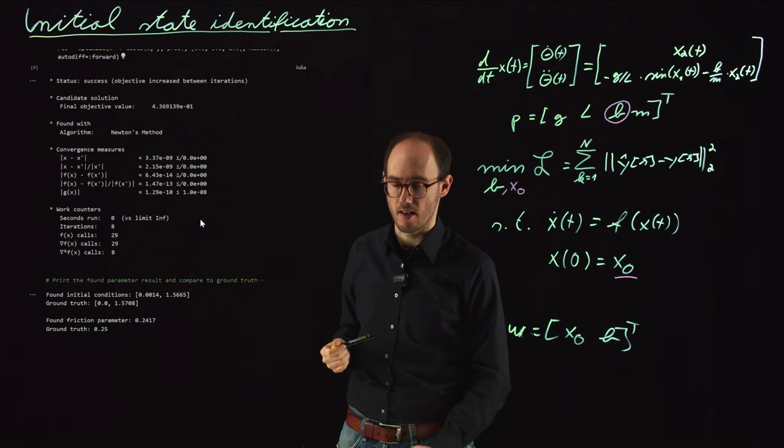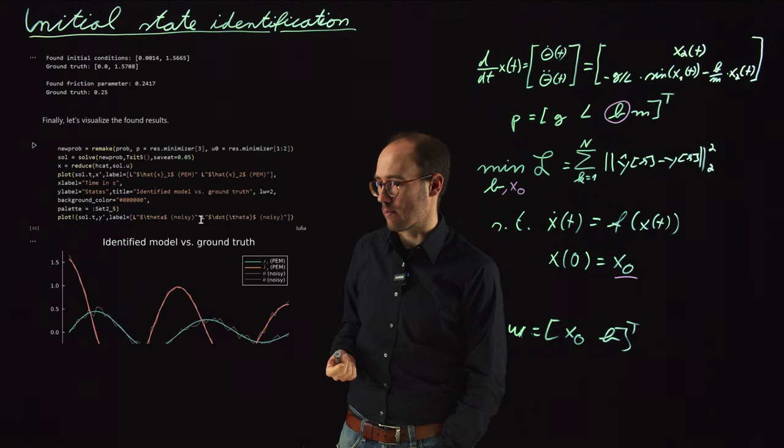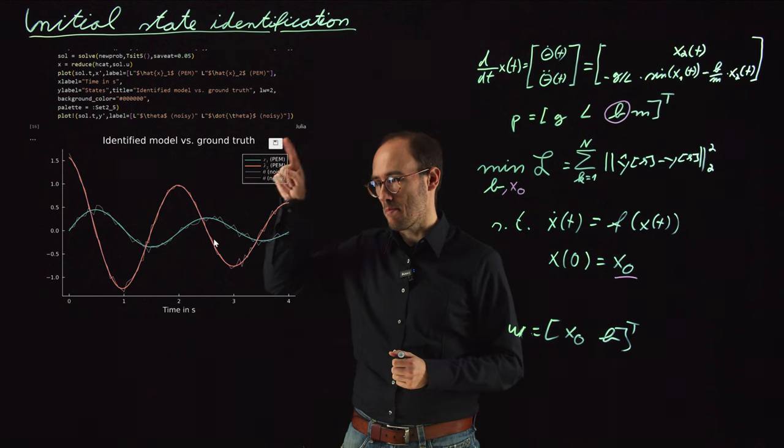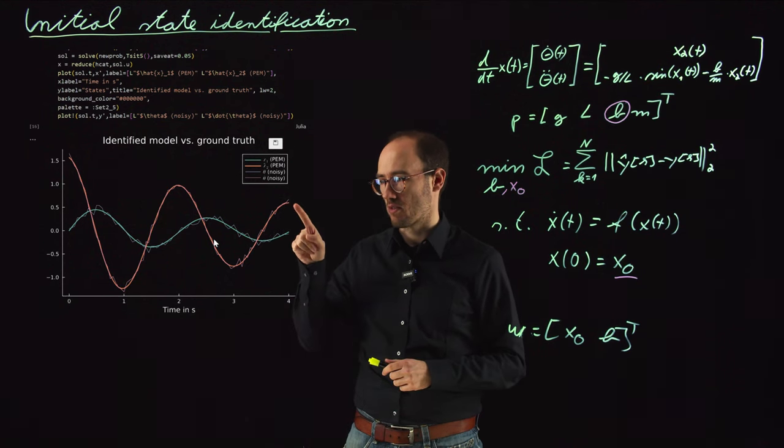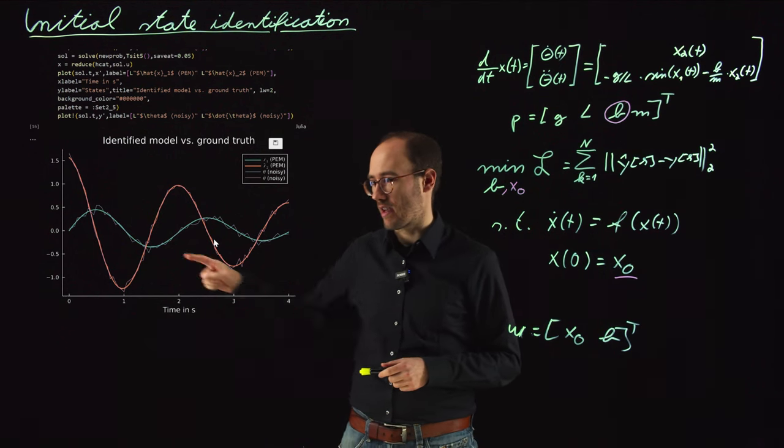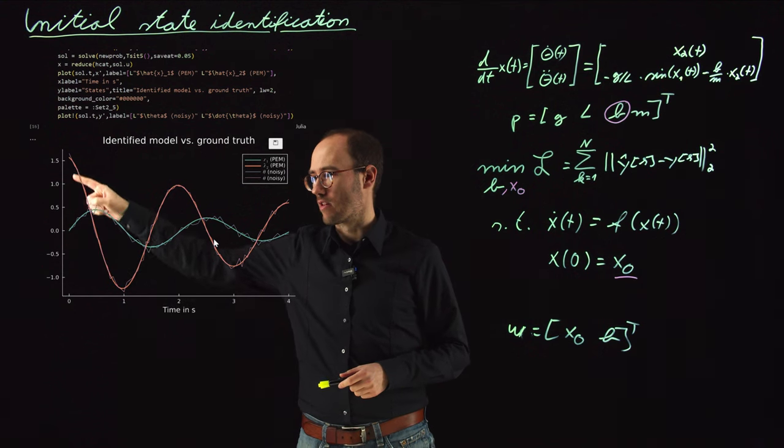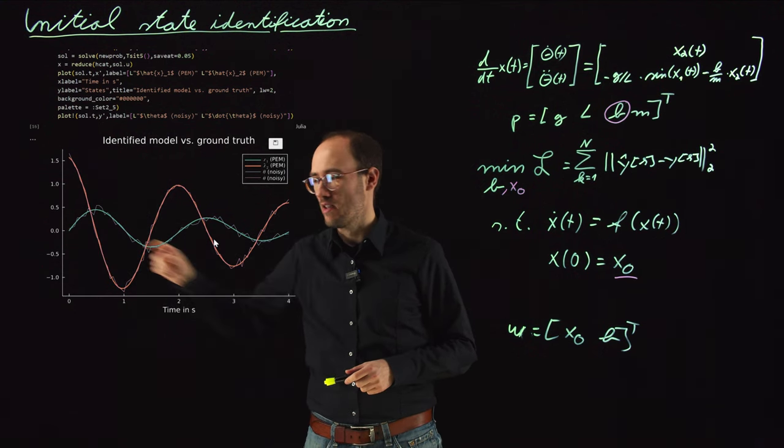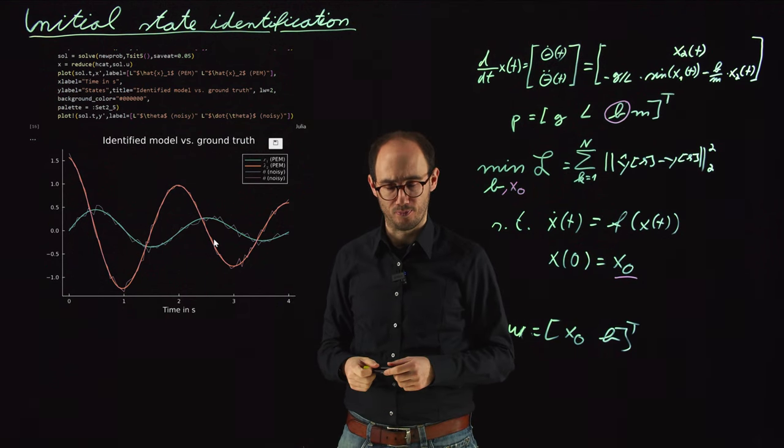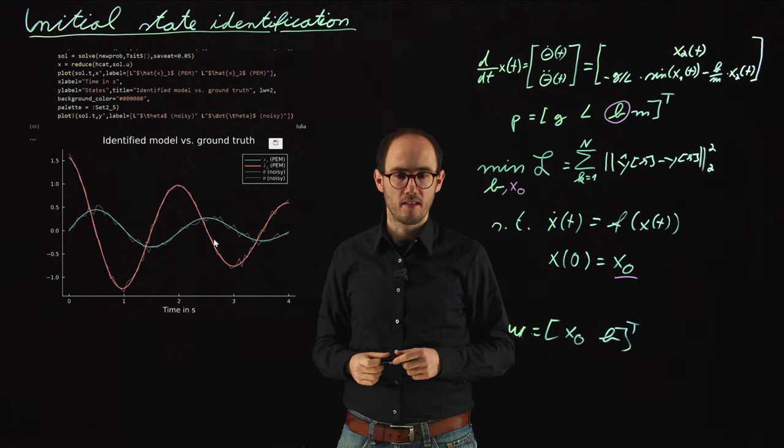And if we plot the result as previously, we can basically see that the PEM model so our fitted model versus the noisy ground truth data is still very accurate and that as we can see here at t being zero obviously the initial condition for which we solve this ODE using the Julia inbuilt ODE solvers are still very accurate.